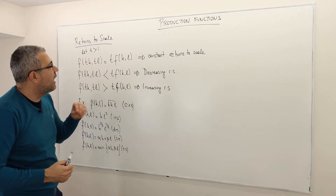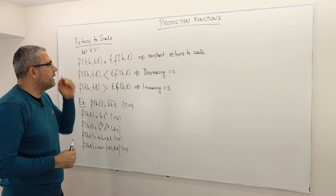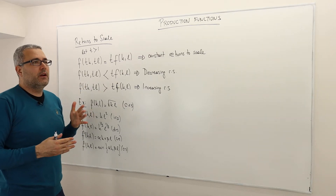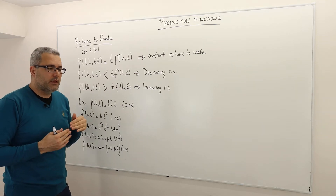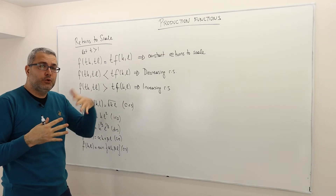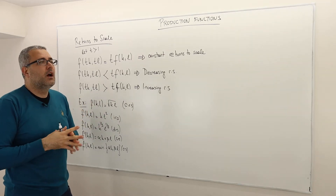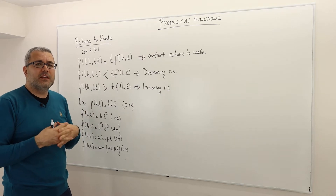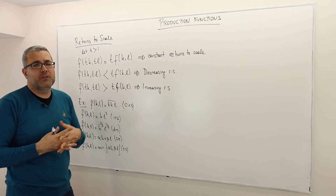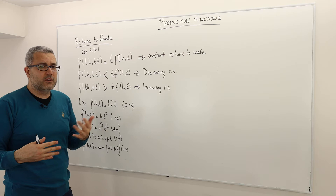We're going to talk about a concept called returns to scale. The intuition is the following: suppose we double our inputs — two times more labor and two times more capital. The question is, can I double my outputs? Well, sometimes you double your outputs. Sometimes it's going to be less than double, and sometimes it's going to be more than double.